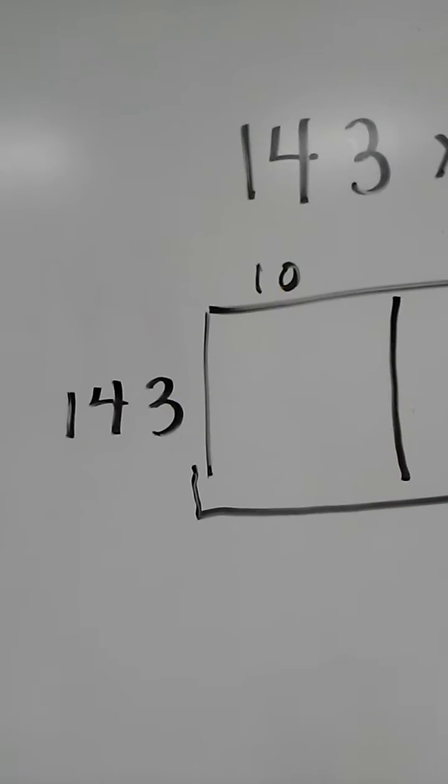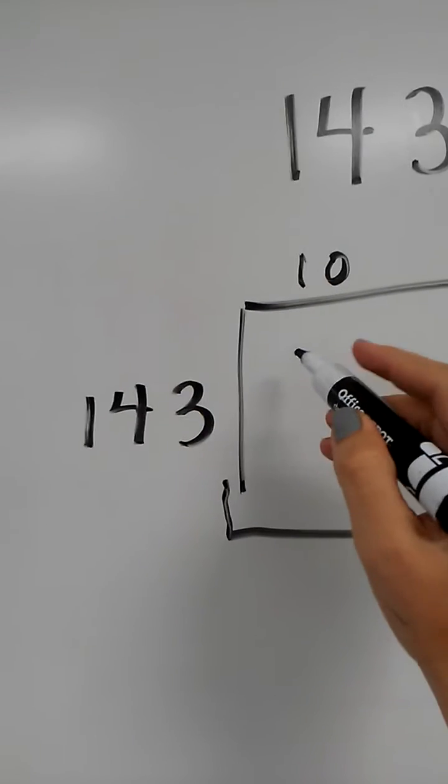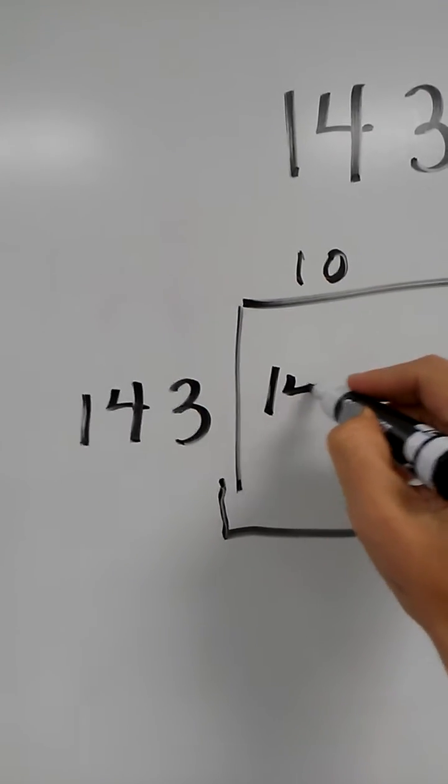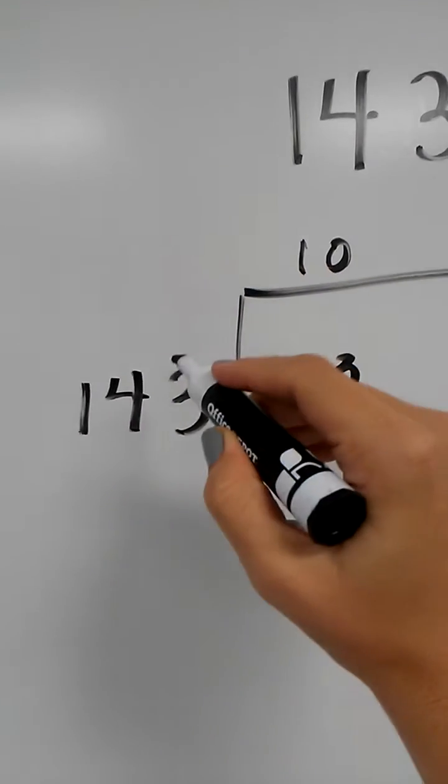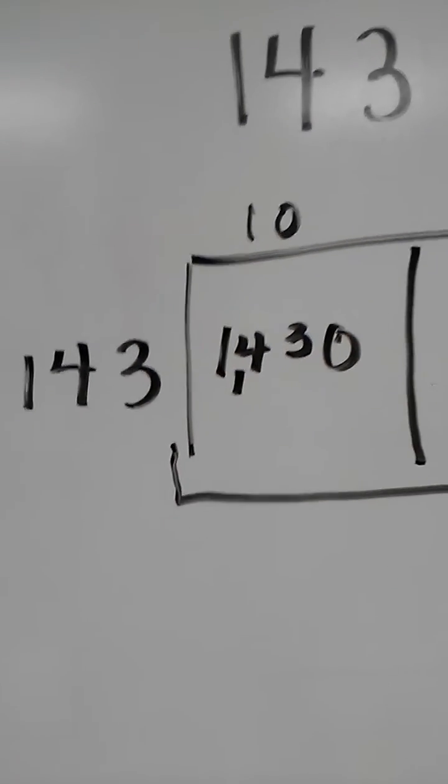This box represents 143 times 10. I can do that in my head. I'm thinking 1 times 143, which is 143, but since it's actually 143 times 10, it would be 1430.